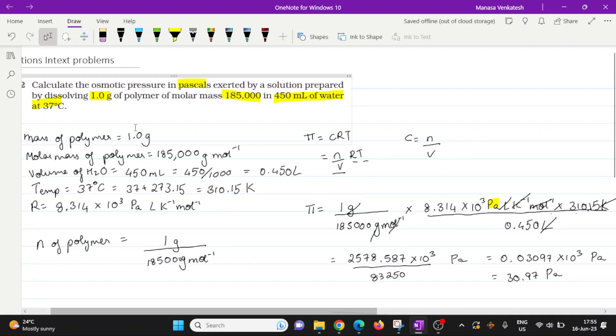We were also given the molar mass, and then we were given the volume and the temperature. We first converted the temperature from Celsius to kelvin. We then used the formula π equals CRT. And C, that's the concentration, can be given by number of moles divided by the volume. So we used that and R needs to be considered with the units pascal. So because of that,